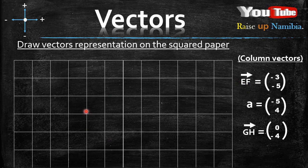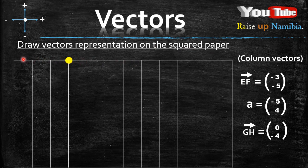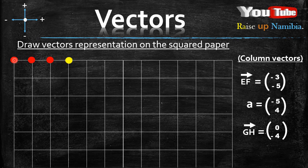Let me move the starting point up here. Now for EF, we want to start on the x-axis, which is the horizontal line. What are we given for the x-axis? We are given a negative 3. So from our starting point, will we move to the right or to the left? Since it's negative, we will move to the left — three times: one, two, three.